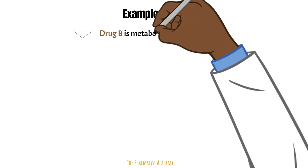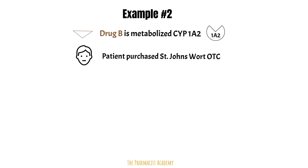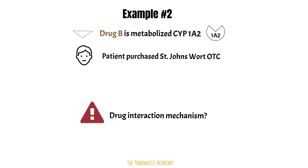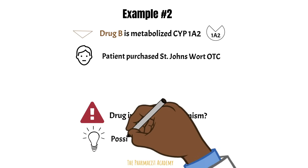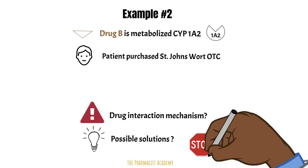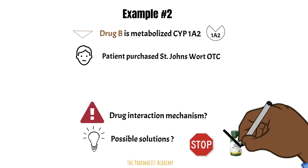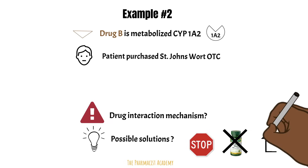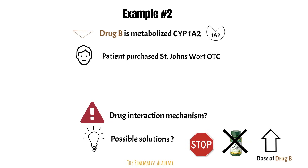Drug B is metabolized by CYP1A2. We have a patient who just purchased St. John's wort over the counter. The mechanism is that St. John's wort is a strong inducer, so it will increase the metabolism of drug B, which will lead to a decrease in its levels. Depending on the drug interaction, you may want to avoid the combination — it would be a contraindication. You can counsel the patient to avoid taking St. John's wort, and you can also increase the dose of drug B as needed.